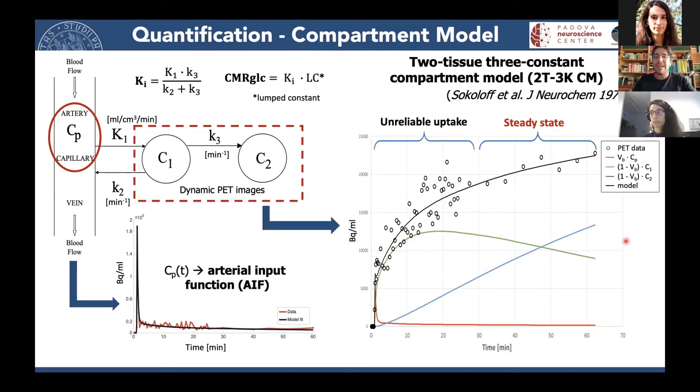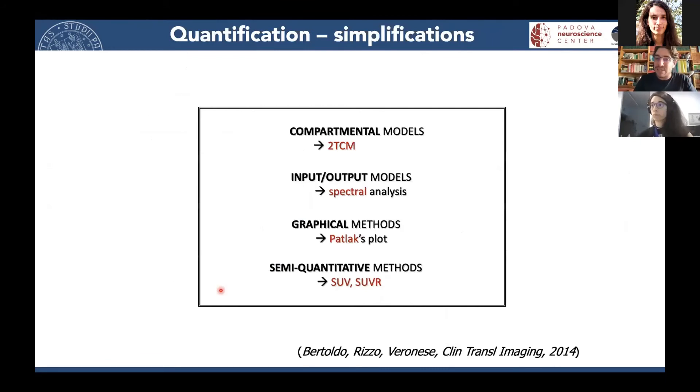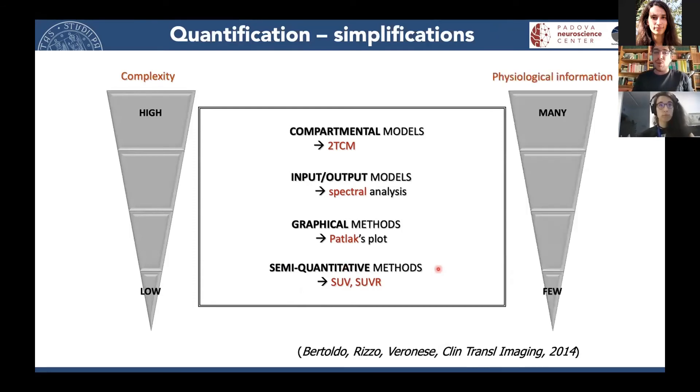So this is just to give you an idea of what we can get from the full kinetic quantification of FDG. However, it's quite difficult because we need the dynamic images, we need an arterial input function extracted from arterial samples usually, and complex mathematical modeling. So many instruments have been devised to simplify this description. And today you are going to be explained a little bit more about this semi-quantitative standard uptake value. So even though you must be mindful that of course, going down with the complexity and simplifying, we also lose some physiological information, but it's a trade-off.